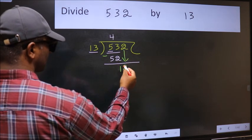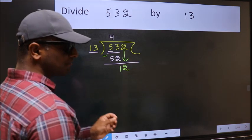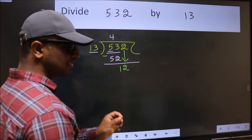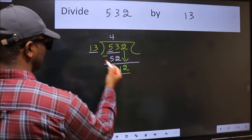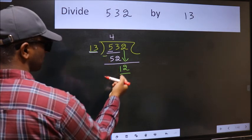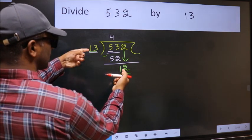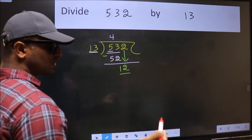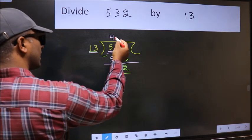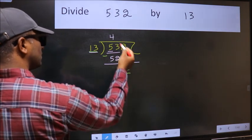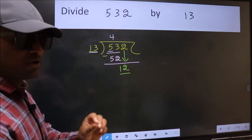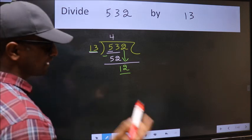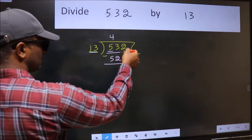After this step, the mistake happens. Here we have 12 and here 13. 12 is smaller than 13, so what many do is they directly put dot, take zero, which is wrong. Why is it wrong? Because just now you brought this number down.